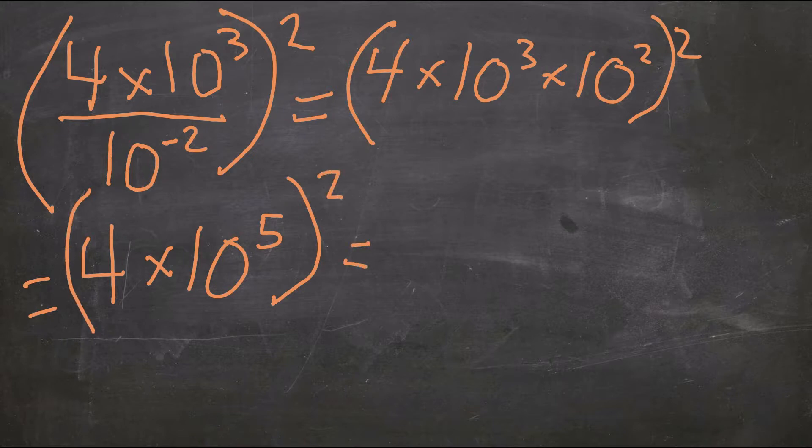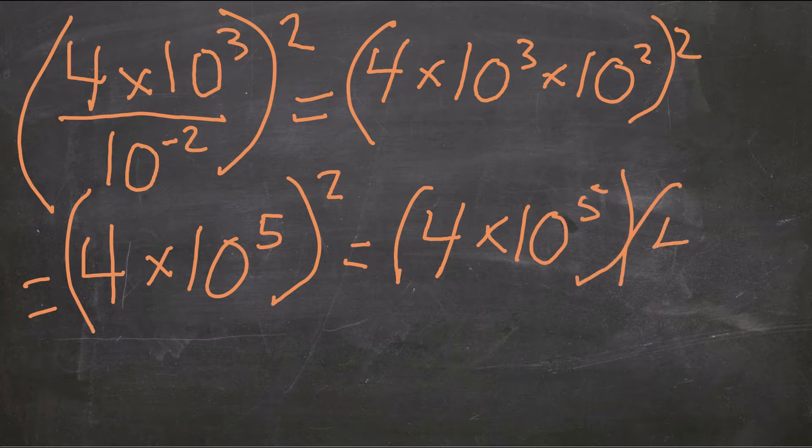So instead of applying the power rule, just to make a better visual, I'm going to expand it out. So I have 4 times 10 to the power of 5 multiplied by itself, which is 4 times 10 to the power of 5.